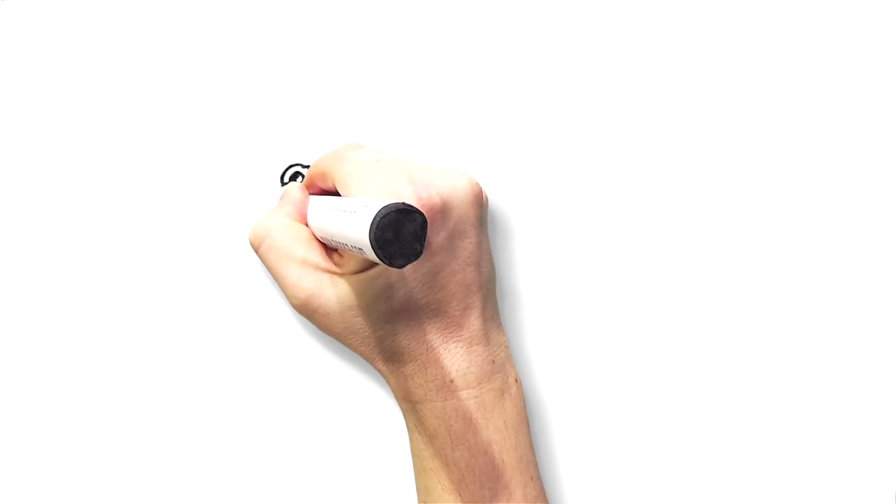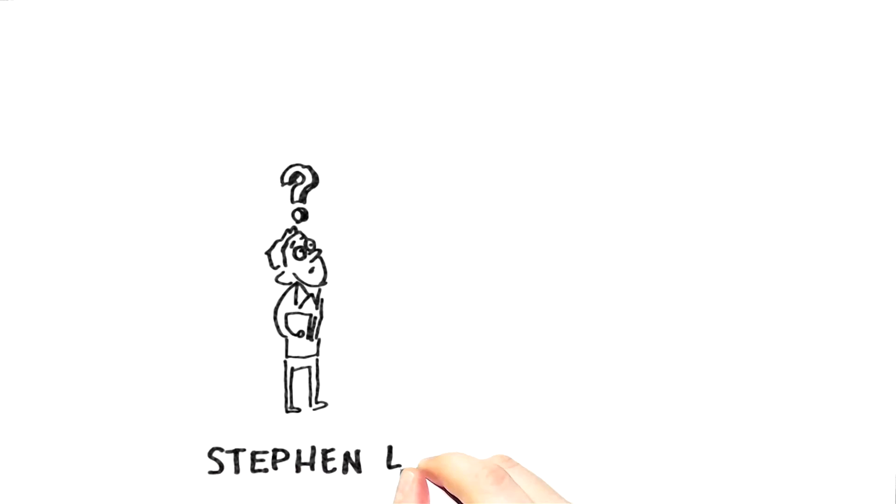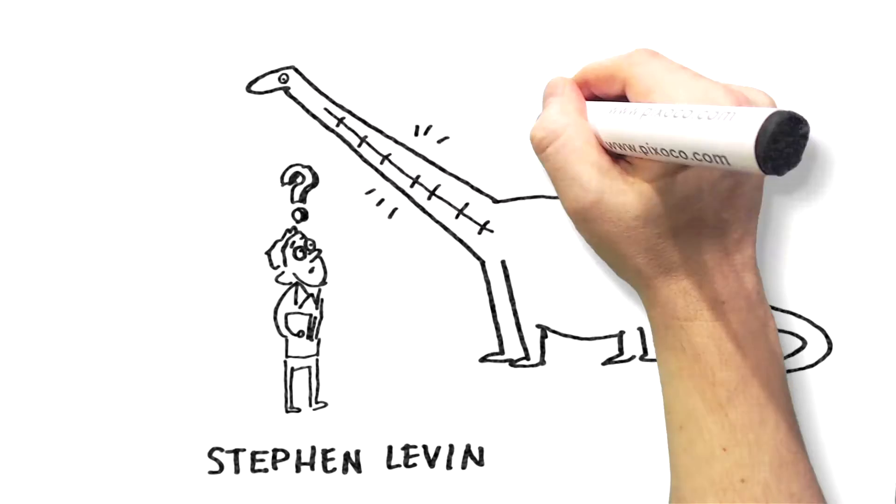At the Natural History Museum in Washington DC back in the 70s, the orthopedic Stephen Levin saw a giant dinosaur with a very long neck. Suddenly it hit him. It shouldn't be possible.